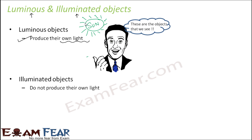We can see luminous objects because they are the ones which are producing light. Light is present there and we have our eyes which are functioning and we have a brain, so we can actually see that object and also perceive what we are seeing. Luminous objects are those objects which have their own light and they can be seen.